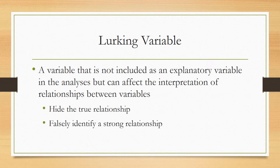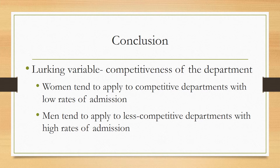To explain why this happens, I need to define a lurking variable — a variable not included as an explanatory variable in the analysis, but which can affect the interpretation of relationships between variables, hiding the true relationship or falsely identifying a strong one. This example is due to the lurking variable of departmental competitiveness. Research found that women tended to apply to more competitive departments with lower admission rates, while men tended to apply to less competitive departments with higher admission rates — making it appear that men were admitted at higher rates overall.